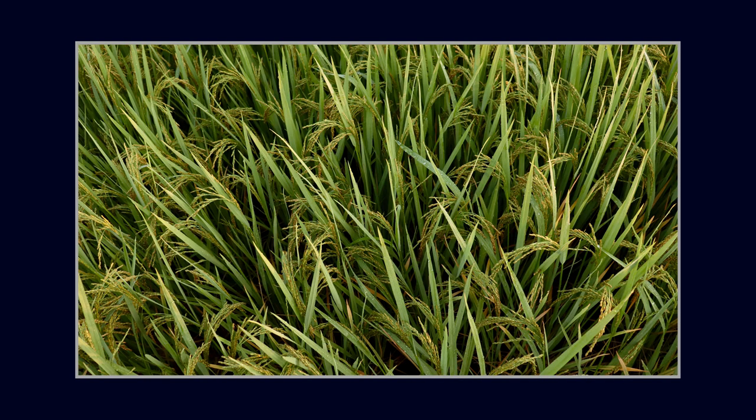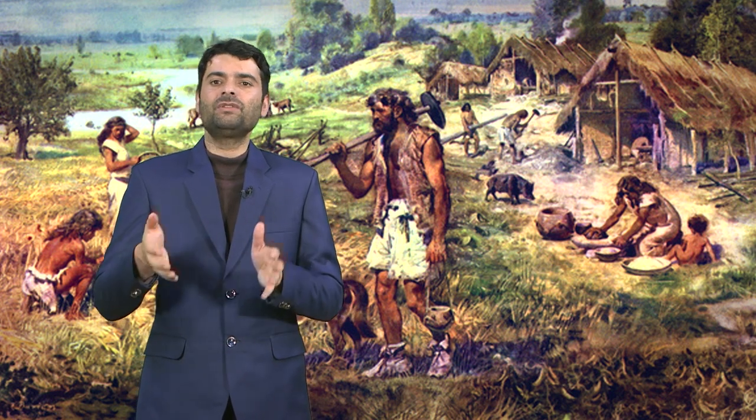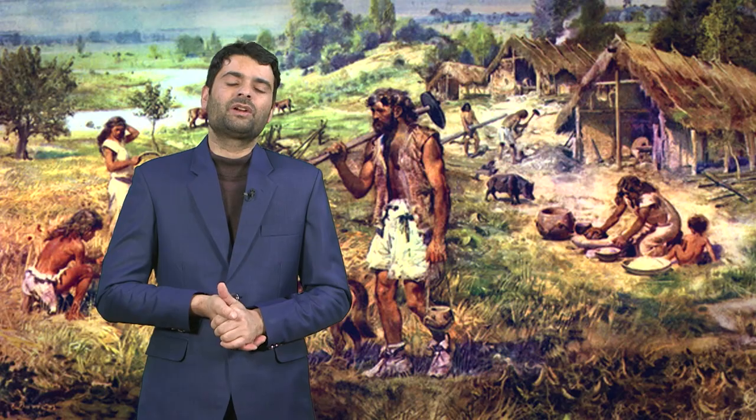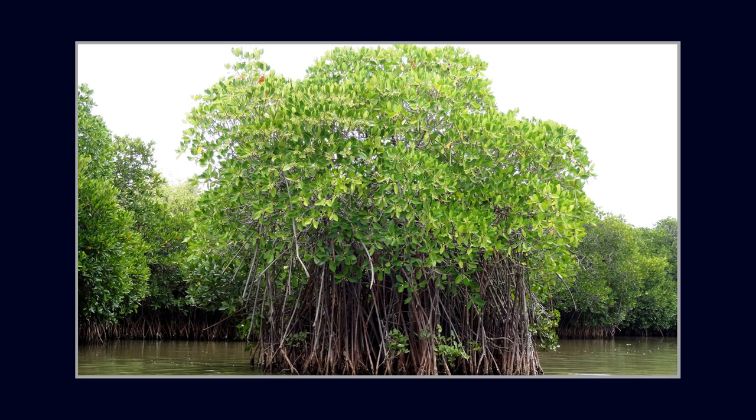Fields surrounded the towns and pastures were far away. Linear nucleated settlements were typical in the water-rice growing eastern parts of India. The range of forests includes tropical, deciduous, pine, and fir, as well as vast terrain in the wetter regions. The vegetation in these forests includes teak, ebony, and sandalwood, in addition to savannah, shrubs, and coarse grasses. Mangrove swamps could be found in the estuaries of the Indus, Ganges, and Mahanadi river systems.